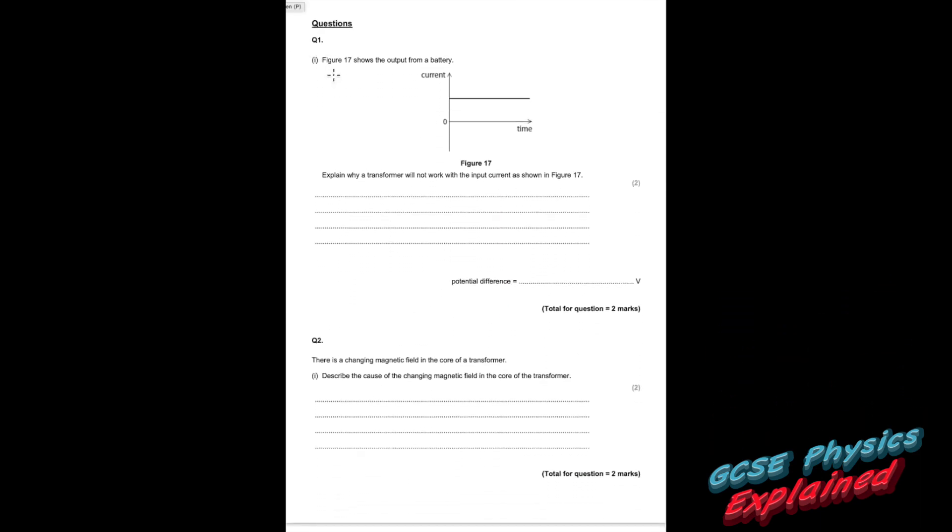Question 1. Figure 17 shows the output from a battery. So batteries straight away, I want that to trigger you to say that's DC, which is direct current. So you can see it's a steady current. Alternating current is the current that goes up and down like that.